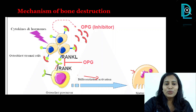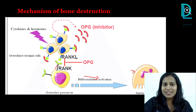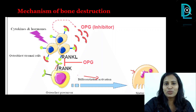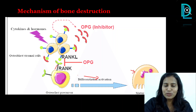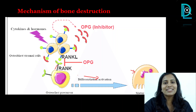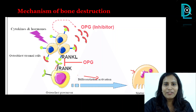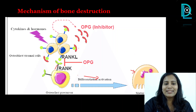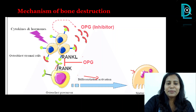During times of periodontal destruction, pro-inflammatory cytokines are released — that is Tumor Necrosis Factor alpha (TNF-α) and Interleukin-1 beta (IL-1β). These will upregulate the expression of RANK-L. Remember that.